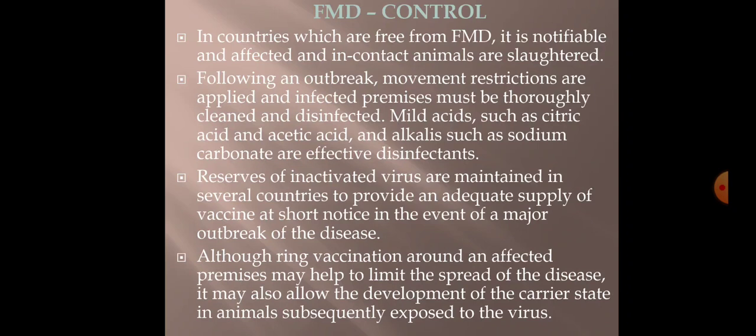For control of FMD, countries that are free from FMD apply a test-and-slaughter policy — affected and in-contact animals are slaughtered. Following an outbreak, movement restrictions are applied, and infected premises must be thoroughly cleaned and disinfected using mild acids such as citric acid and acetic acid, or alkalis such as sodium carbonate, which are effective disinfectants.